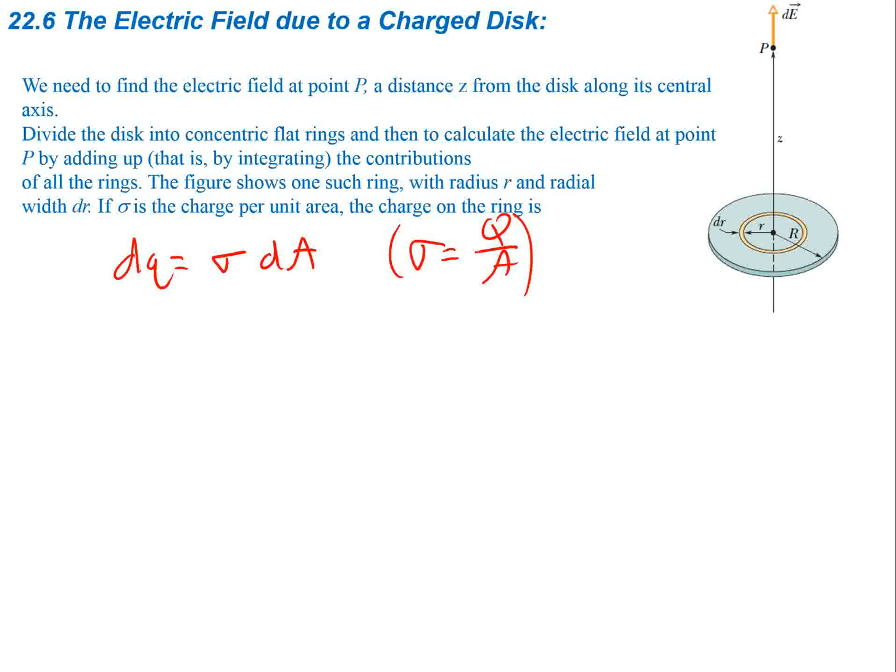And dA in this case is going to be the area of our little rings. So if we take the circumference of the ring and multiply it by the thickness dr, this is going to be equal to sigma 2πr dr.